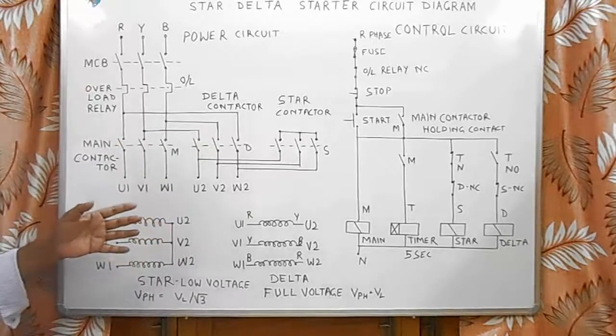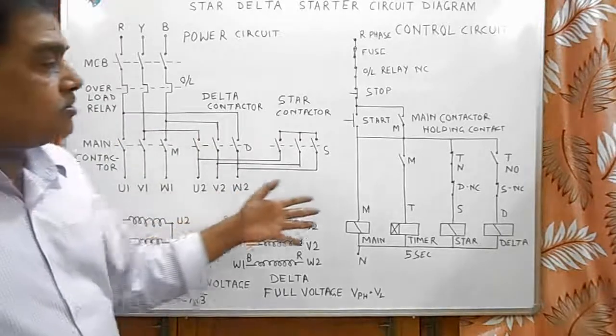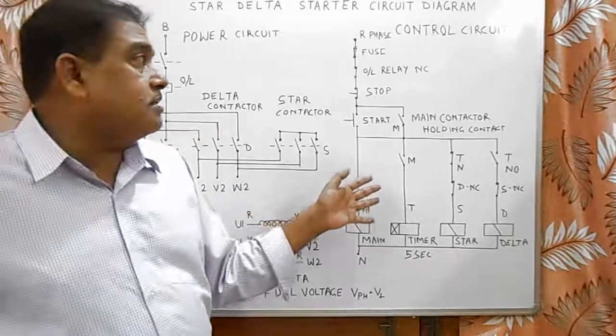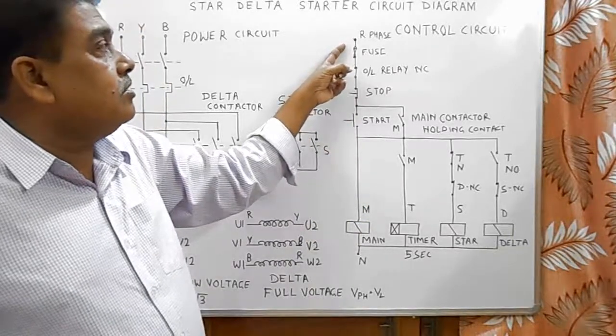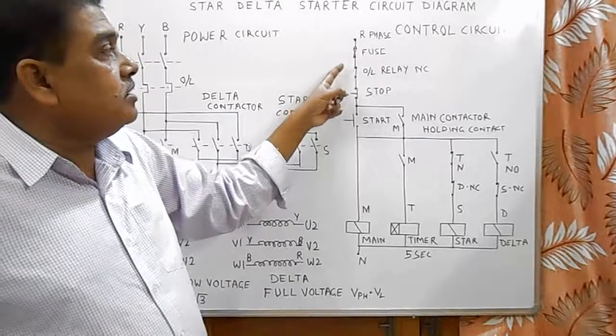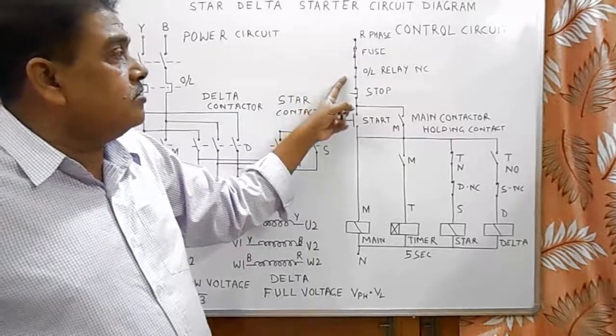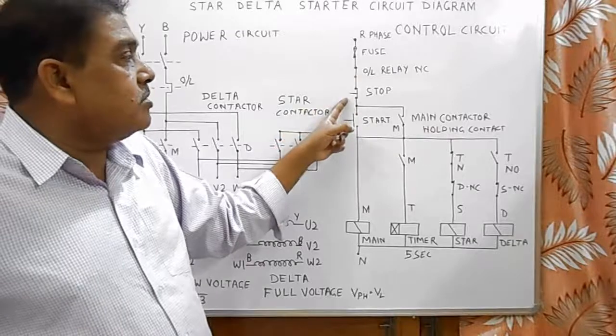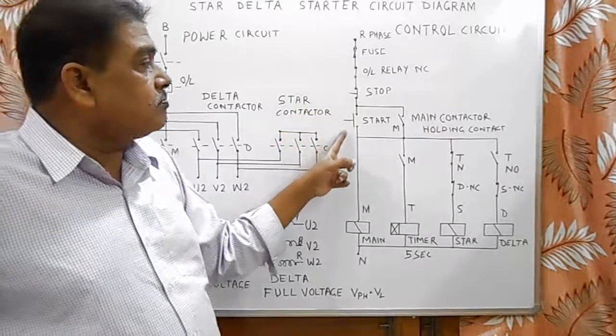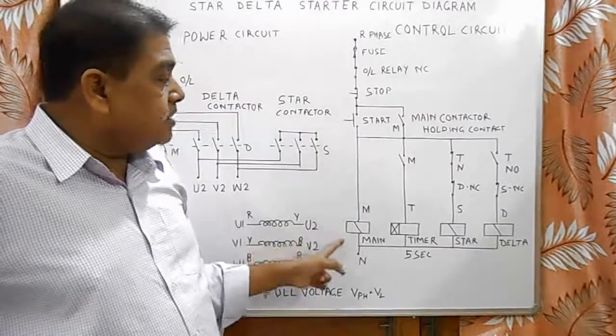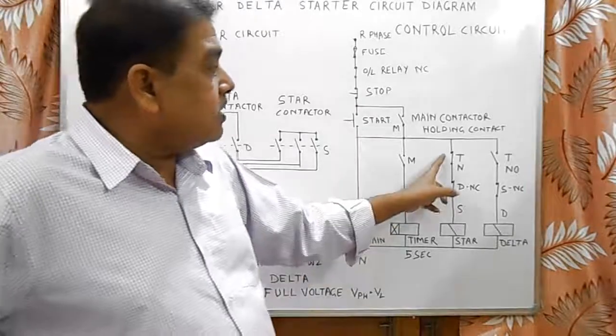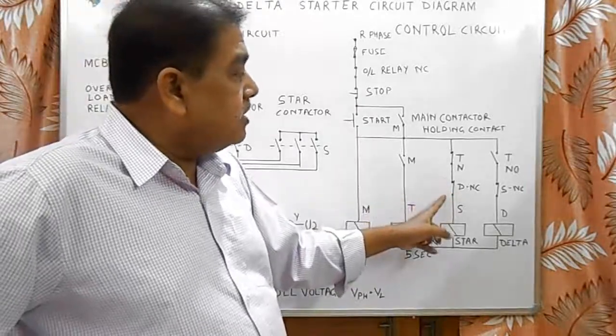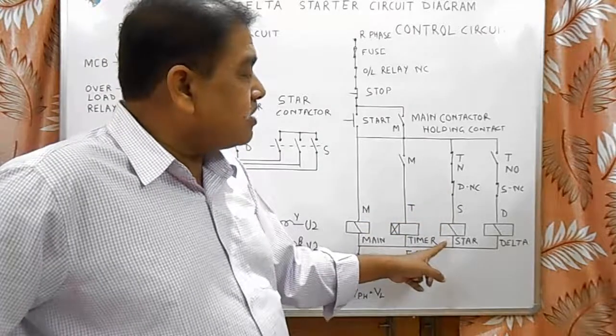For this scheme to work properly, we have a control circuit. In this control circuit, R phase supply is taken for control. It goes to control fuses and from there to overload relay and then to stop button. As soon as we push start button, main contactor picks up and with the help of timer NC contactor and delta NC contactor, star contactor picks up.